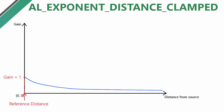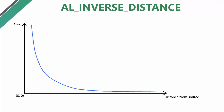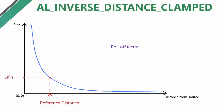When using the clamped version there's also a max distance variable that you can set, and after this distance the sound won't be attenuated anymore. The inverse distance model is pretty similar to the exponential model, with just a slightly different shape to the curve. Again, the reference distance determines the distance from the source at which the gain is 1, the roll-off factor determines how steep the curve is, and in the clamped version everything before the reference distance and after the max distance is clamped.